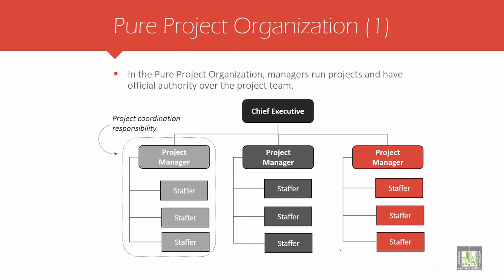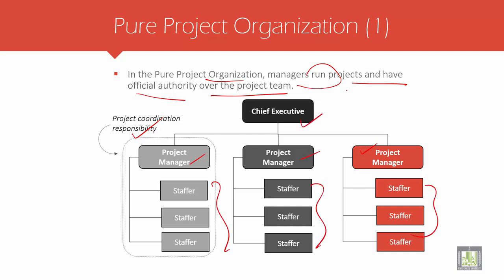Then you have pure project organization. Here in pure project organization, managers run the project and have official authority over the project team. The black one is project coordination responsibility — this project is a team with a project manager, staff, and the head is the chief executive.